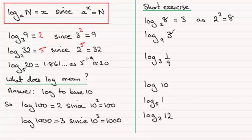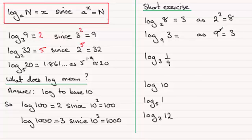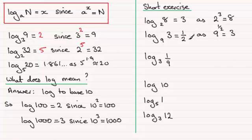The next one is a bit harder: the log of 3 in base 9. It might seem impossible — what do you raise 9 to in order to get 3? Well, the square root of 9 is 3, and the index we raise 9 to when square rooting is a half. So the log of 3 in base 9 is one half. Well done if you got that without the calculator!